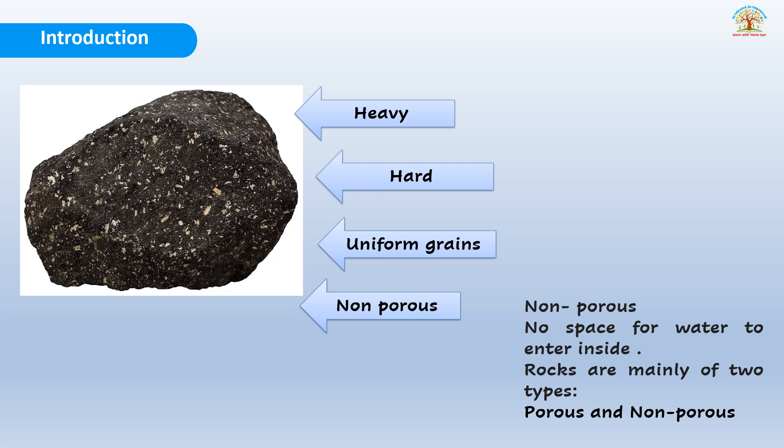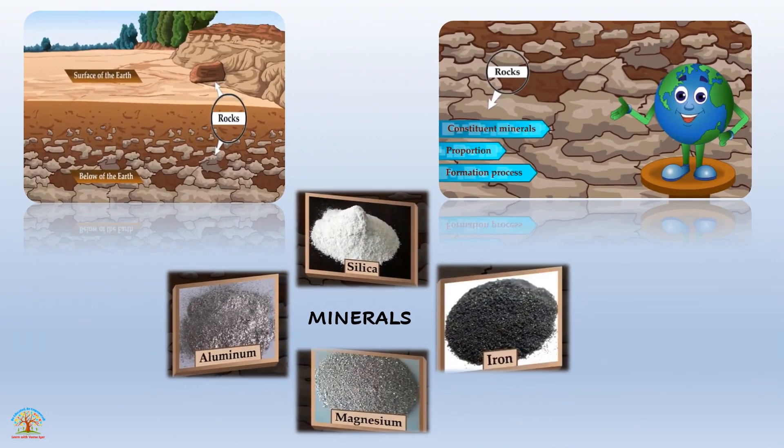Rocks are found on the land surface and also below the earth. Rocks are a mixture of different minerals formed by natural processes in the lithosphere. Rocks have their constituent minerals in particular proportions during the formation process. The properties of rocks depend upon the constituent minerals, their proportion, and the formation process. There are certain important major rock-forming minerals like silica, aluminium, magnesium, and iron, apart from many more minerals that we get from rocks.